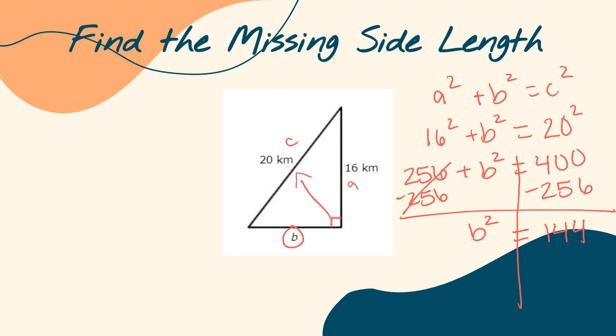Great job. Now that I have B squared equals 144, how do I find out what just B equals? You take the square root of both sides. The square root of B squared — those cancel each other out — so I'm left with B equals the square root of 144. What number multiplied by itself equals 144? That's 12, because 12 times 12 equals 144. You can check by doing 16 squared plus 12 squared and seeing if that equals 20 squared. I'll let you do that on your own.